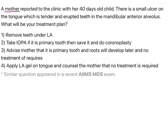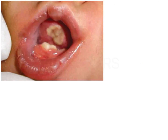A mother reported to the clinic with her 40-day-old child. There is a small ulcer seen on the tongue which is tender, and there are erupted teeth within the mandibular anterior alveolus. The clinical picture of this child shows erupted teeth present in the mandibular anterior alveolus, and we can see there is an ulceration on the tongue.